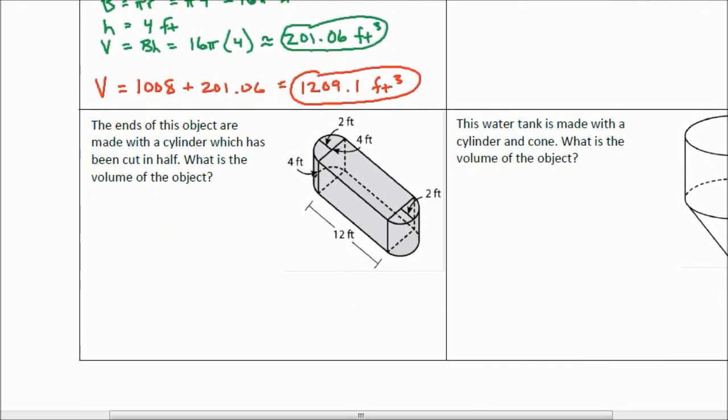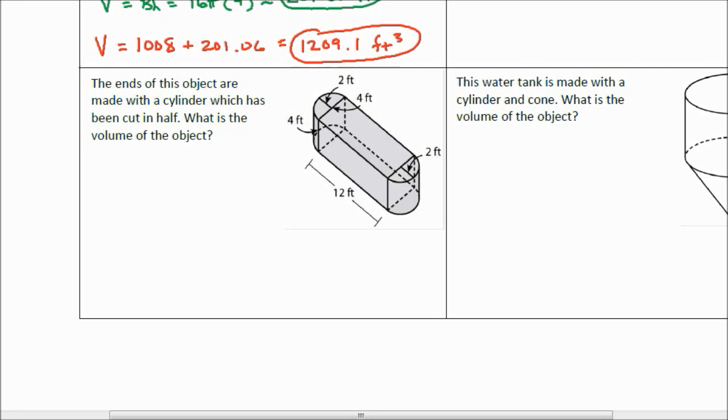Let's take a look at the next one. The ends of this object are made with a cylinder which has been cut in half. That's important to know. What is the volume of the object? Well I can clearly see in this picture that this middle piece is just a rectangular prism. Let's do that first. So let's find the area of the prism first.